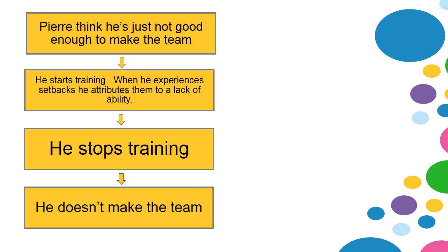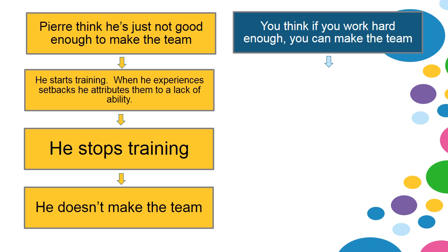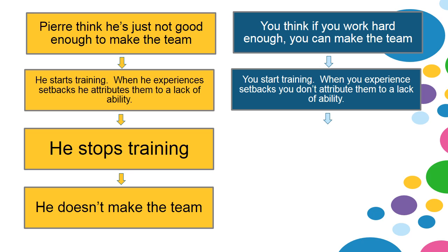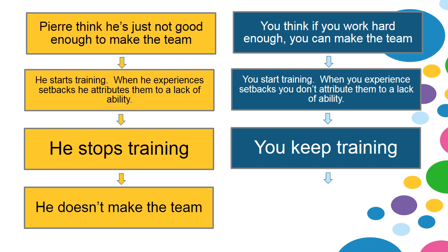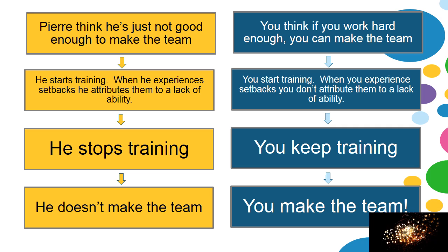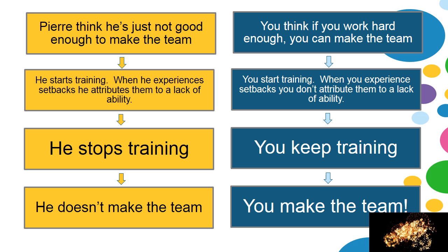Conversely, you think that if you work hard enough, you can make the team. So you start training, and when you experience setbacks, you don't attribute them to a lack of ability. You think, okay, training means that sometimes it's hard, but I'm just going to keep working. So you keep training and then — you make the team. Both you and Pierre experienced a self-fulfilling prophecy. Pierre thought he wasn't good enough and ended up not making the team, fulfilling that prophecy. You thought you could make the team if you worked hard, and you did — fulfilling that prophecy too.